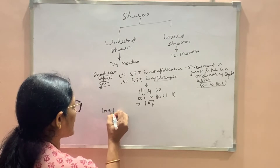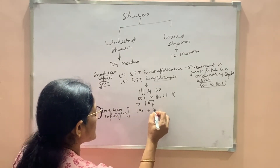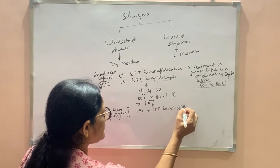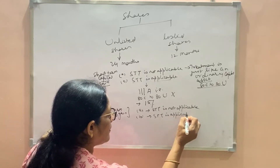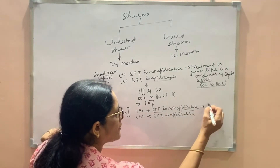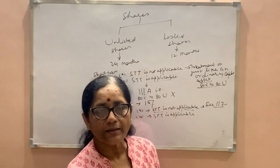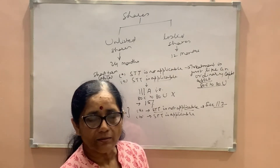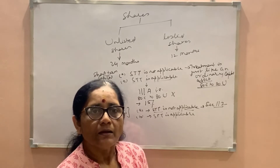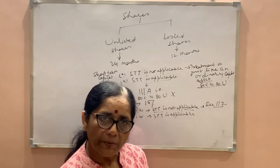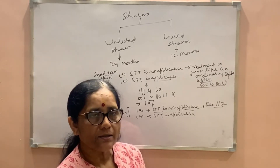Then we have the treatment of long-term capital gain. Here we have two types of circumstances. When security transaction tax is not applicable, we have section 112. Section 112 says: if you are taking the benefit of indexation, calculate the tax at the rate of 20%, and if you are not taking the benefit of indexation, calculate the tax at the rate of 10%. The assessee has both options — without indexation at 10% and with indexation at 20%. No deduction from 80C to 80U; the tax is calculated at a flat rate.